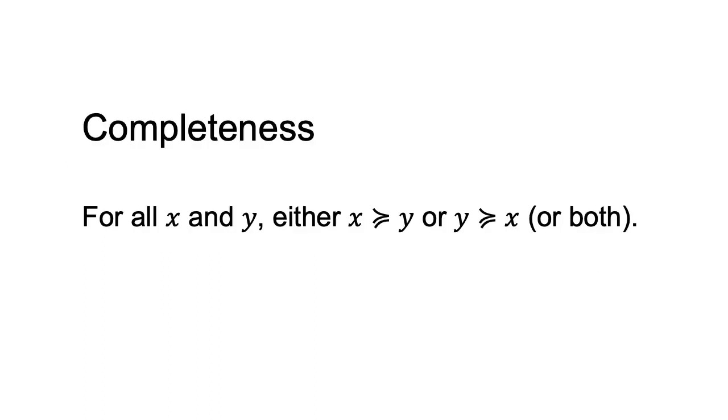Completeness means that an agent can always compare any two options. The agent cannot fail to have a preference between two options, although that preference may be indifference.